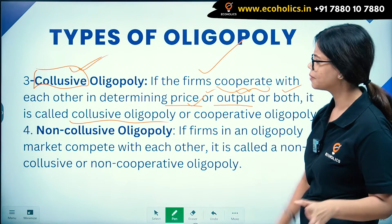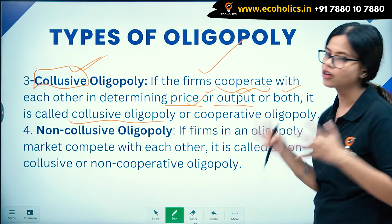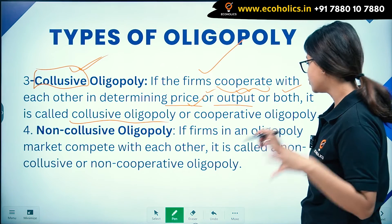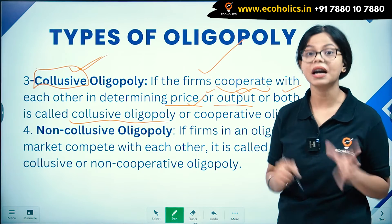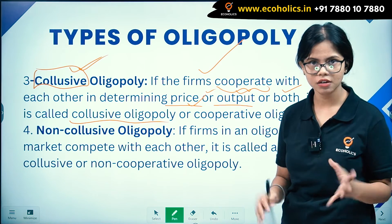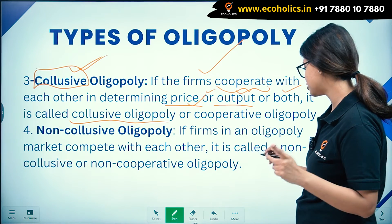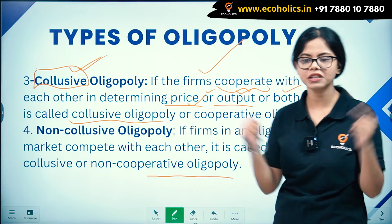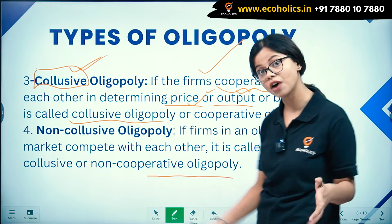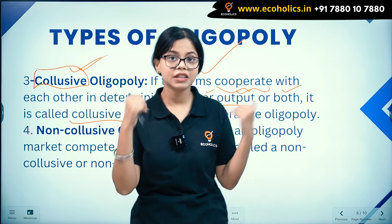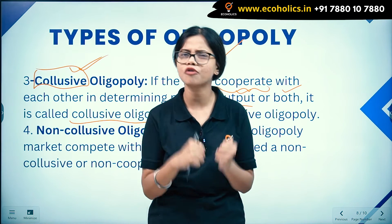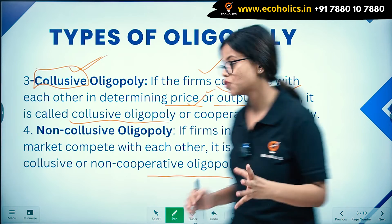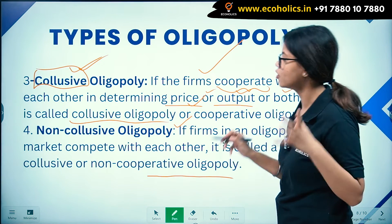The fourth type is non-collusive oligopoly. If the firms in an oligopoly market compete with each other and have not formed any cooperation, it is called non-collusive or non-cooperative oligopoly. There is a lot of competition between these firms.